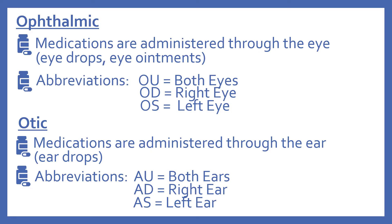Then there's the otic route of administration. These medications are administered through the ear, such as ear drops. Abbreviations include AU for both ears, AD for the right ear, and AS for the left ear.